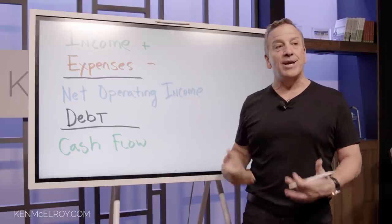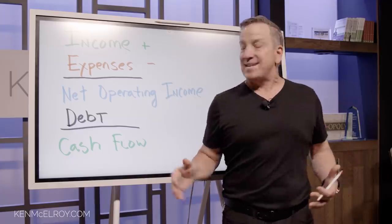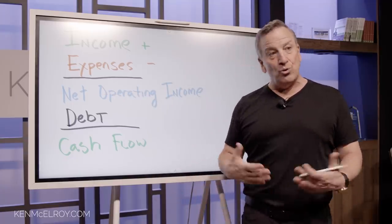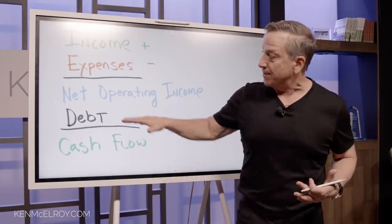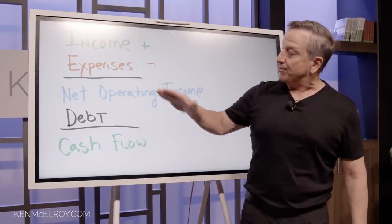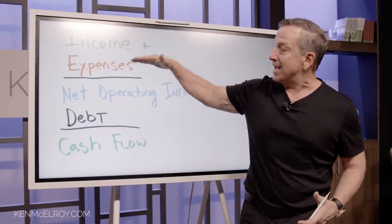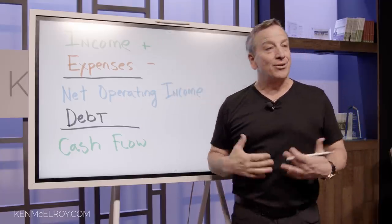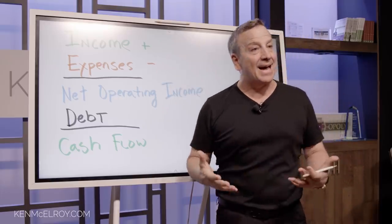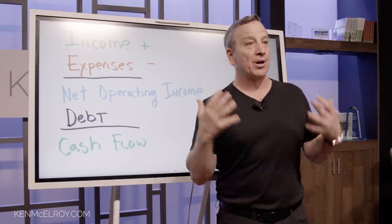In real estate, that's called the net operating income. If you don't have any debt, then that is your cash flow. But if you do have debt or a mortgage payment, that is the next step, and then after that is your actual cash flow. There are lots of things we can do inside of the income, the expenses, and the debt to grow your cash flow.